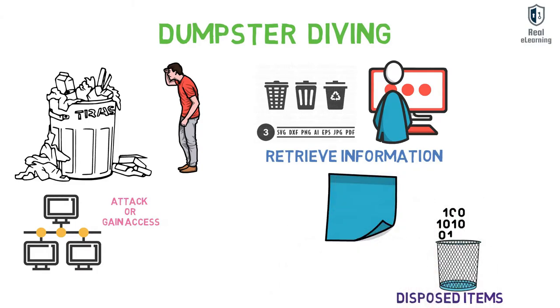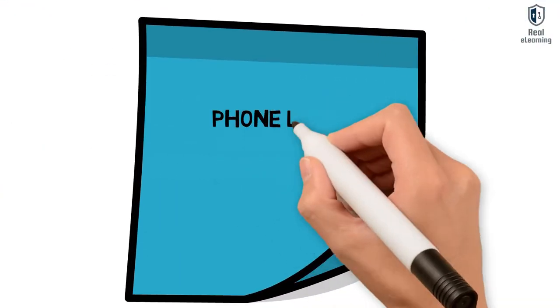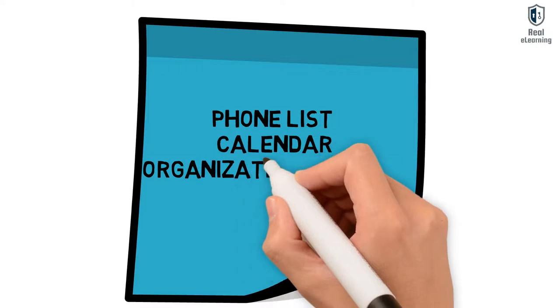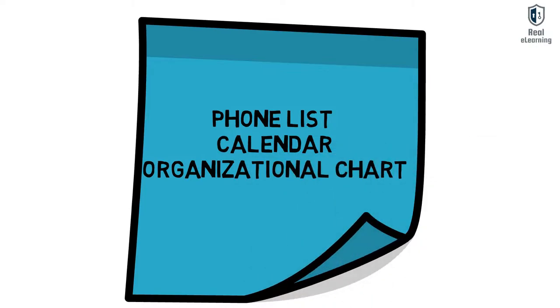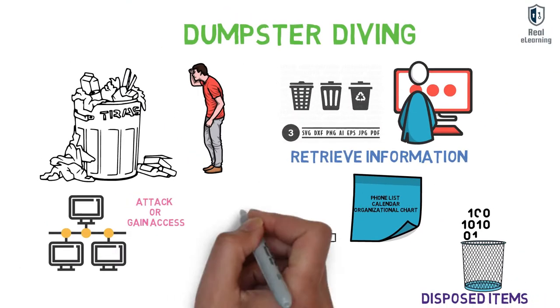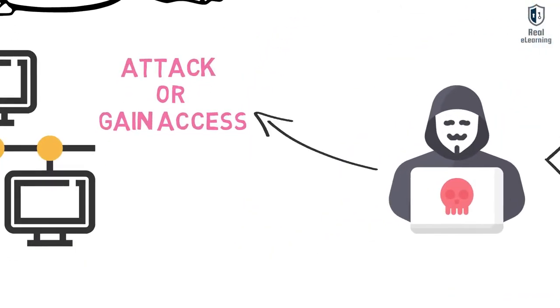Seemingly innocent information, such as a phone list, calendar, or organizational chart, can be used to assist an attacker using social engineering techniques to gain access to the network.